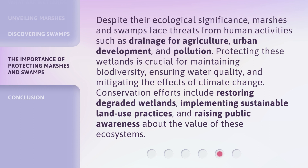Despite their ecological significance, marshes and swamps face threats from human activities such as drainage for agriculture, urban development, and pollution. Protecting these wetlands is crucial for maintaining biodiversity, ensuring water quality, and mitigating the effects of climate change. Conservation efforts include restoring degraded wetlands, implementing sustainable land use practices, and raising public awareness about the value of these ecosystems.